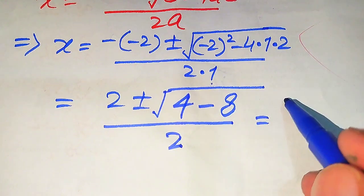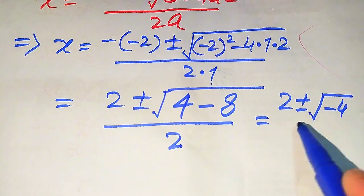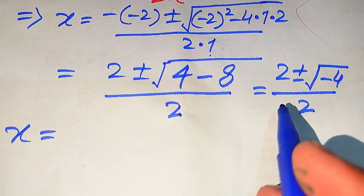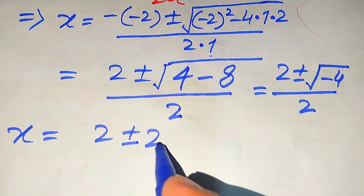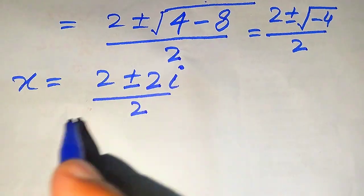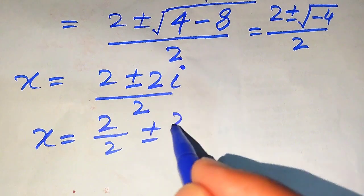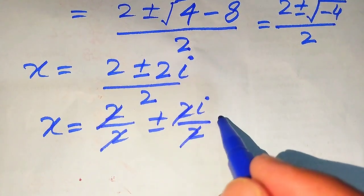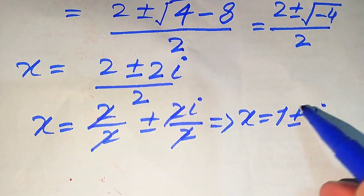Focusing inside the square root: 4 minus 8 gives minus 4, so we have 2 plus or minus square root of minus 4, divided by 2. The square root of minus 4 is 2 iota, since the square root of 4 is 2 and the square root of minus 1 is iota. Breaking the fraction: 2 divided by 2, plus or minus 2 iota divided by 2. The 2s cancel, giving x equals 1 plus or minus iota.